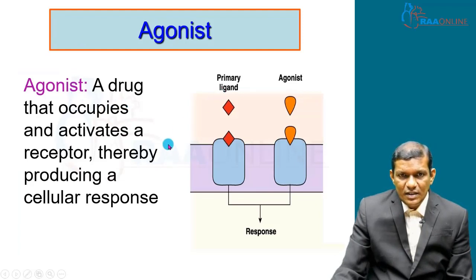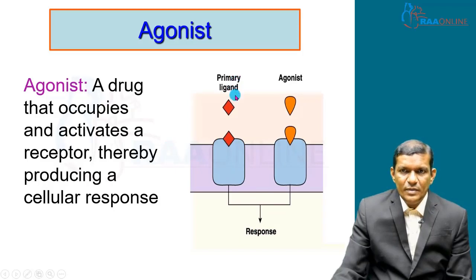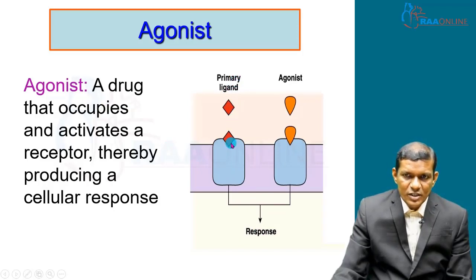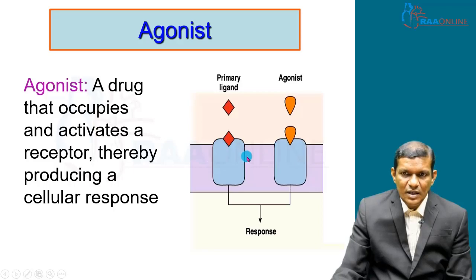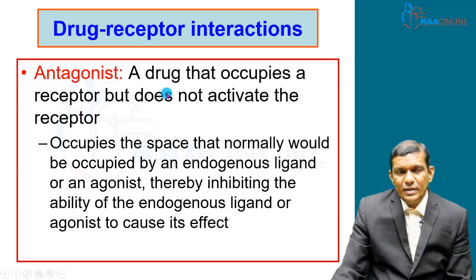An agonist is a drug that occupies the receptor and produces a cellular response. For example, a primary ligand binds to its own receptors on the cell surface and produces the response. Similarly, an agonist does the same.